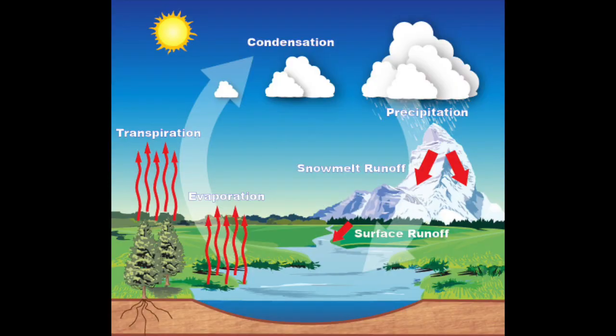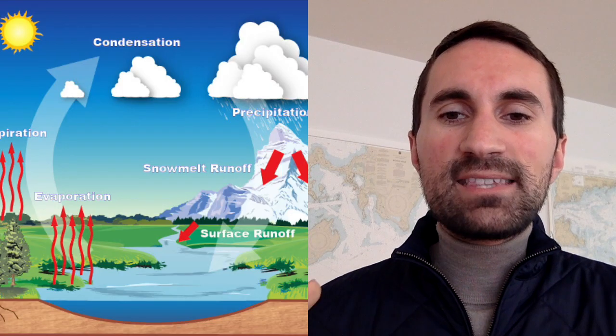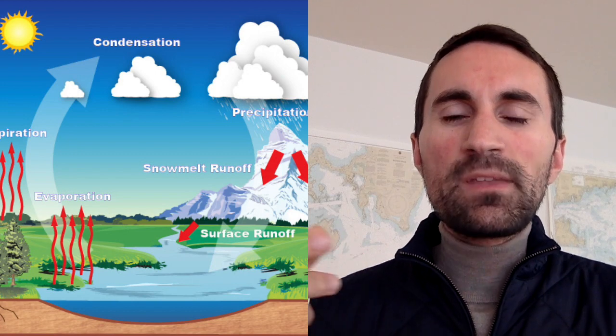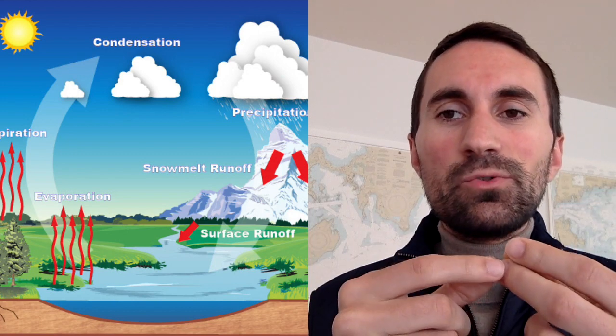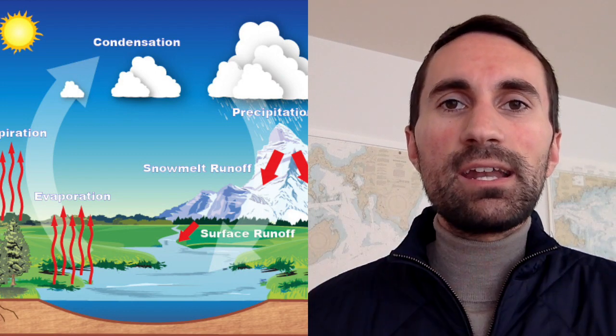You might remember the water cycle — it's one of the first things we usually learn in weather, but let me give you a quick refresher. The sun heats the ground, creating evaporation from ponds, lakes, and streams. That water vapor then rises, and remember, temperatures cool as you climb in the atmosphere. So as that vapor starts to cool, it condenses into water droplets that can generate a cloud.